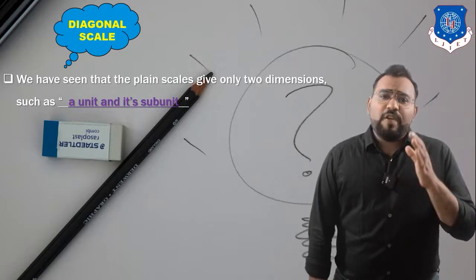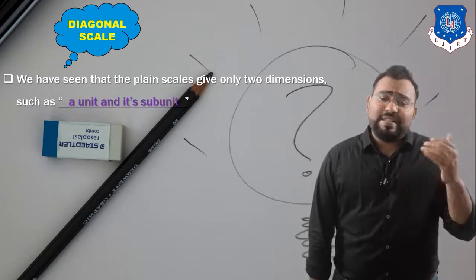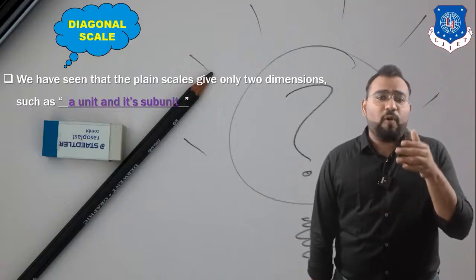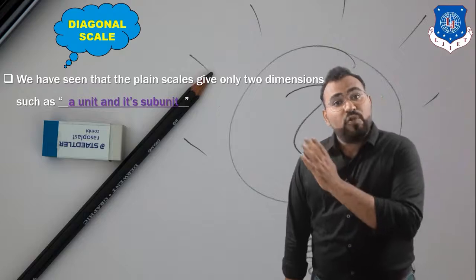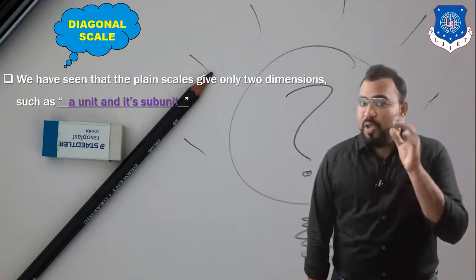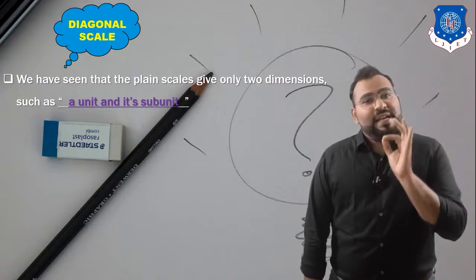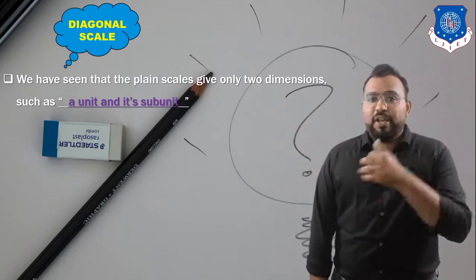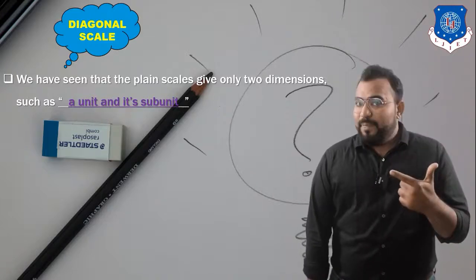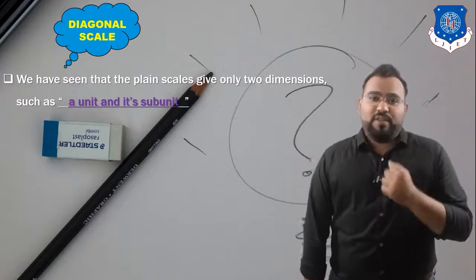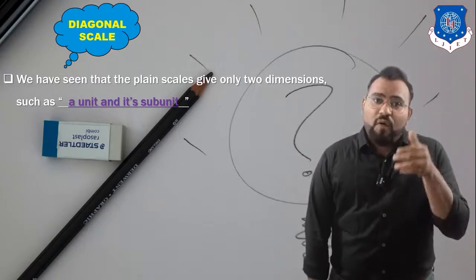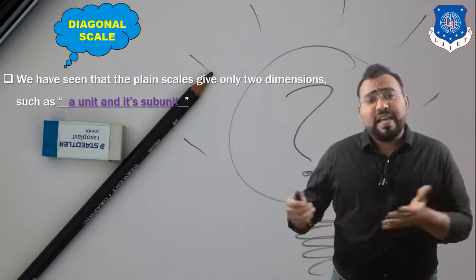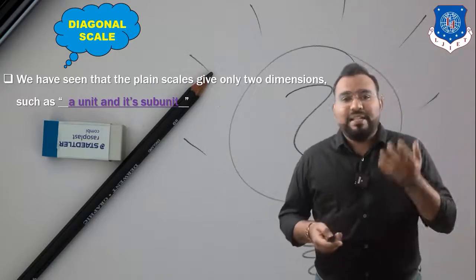We can easily show 4.3 meters on a plane scale, but if we want to measure 4.32 meters, that means four meters, three decimeters, and two centimeters — three units are involved. Since three units are involved, you cannot show this dimension on a plane scale, and that's where the requirement for diagonal scale comes in.